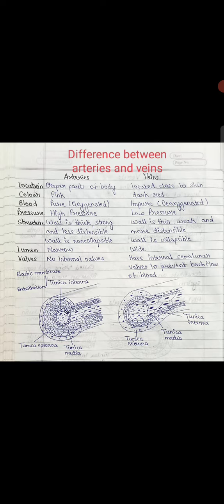Veins have internal valves. Arteries have no internal valves. The valves ensure blood will not flow back. This is the difference between arteries and veins.